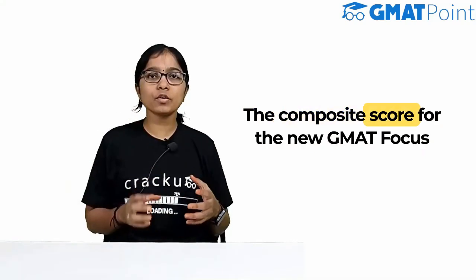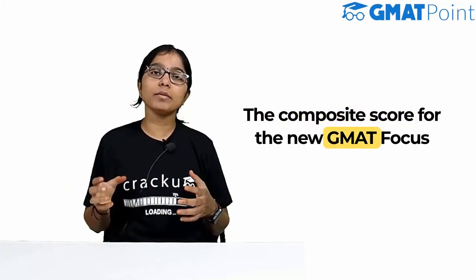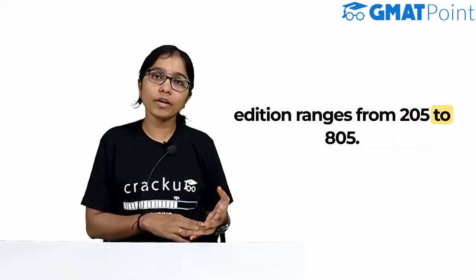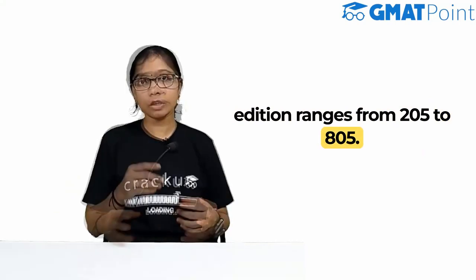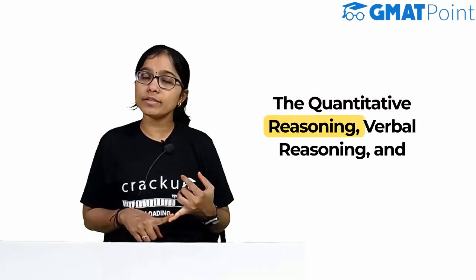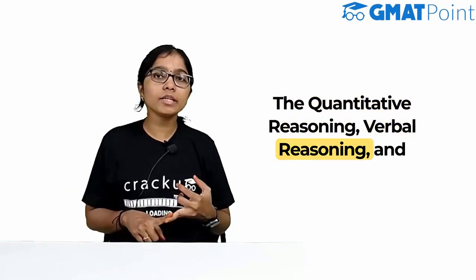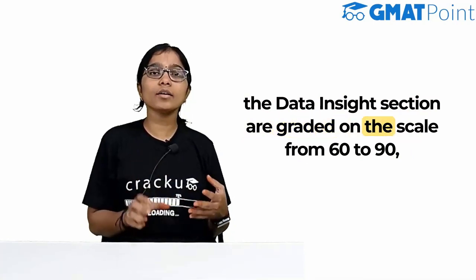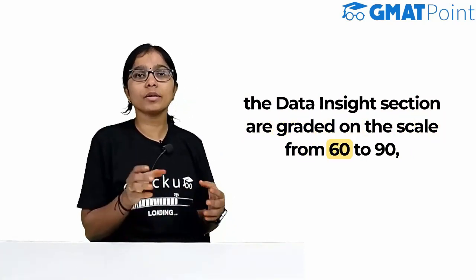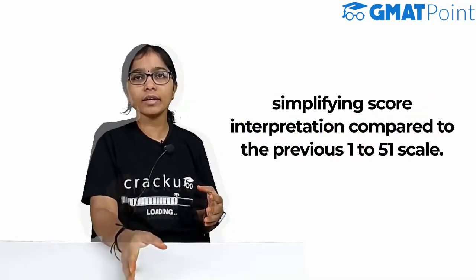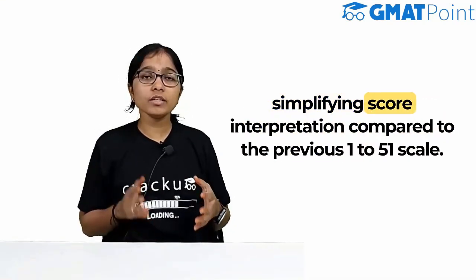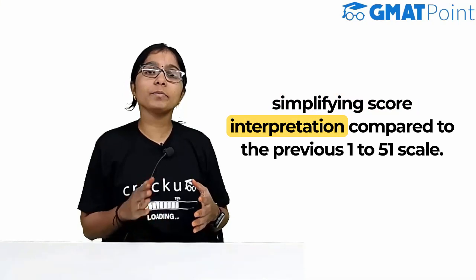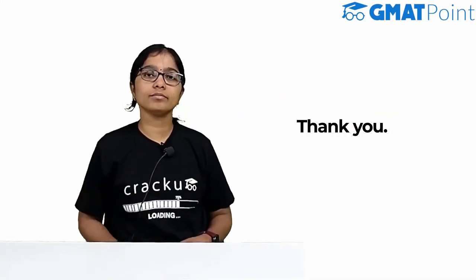The composite score for the new GMAT Focus Edition ranges from 205 to 805. The Quantitative Reasoning, Verbal Reasoning, and Data Insights sections are each graded on a scale from 60 to 90, simplifying score interpretation compared to the previous 1 to 51 scale.